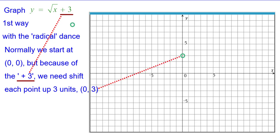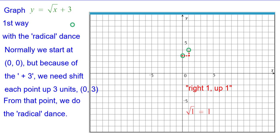Let's plot that. From that point, we do the radical dance, which is right 1 up 1 because the square root of 1 is 1, right 4 up 2 from that point because the square root of 4 is 2, and right 9 up 3 because the square root of 9 is 3.